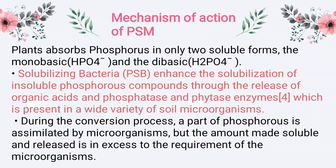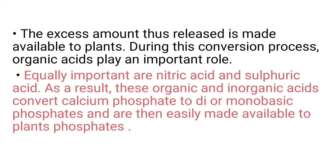Mechanism of Action of PSM: Plants absorb phosphorus in only two soluble forms — the monobasic and the dibasic form. Solubilizing bacteria enhance the solubilization of insoluble phosphorus compounds through the release of organic acids and phosphatase and phytase enzymes, which are present in a wide variety of soil microorganisms. During the conversion process, a part of phosphorus is assimilated by microorganisms.